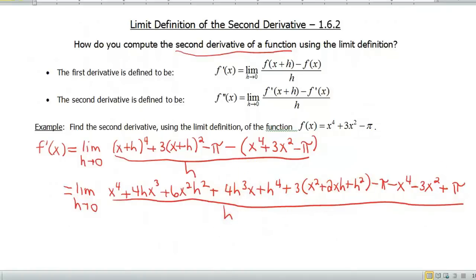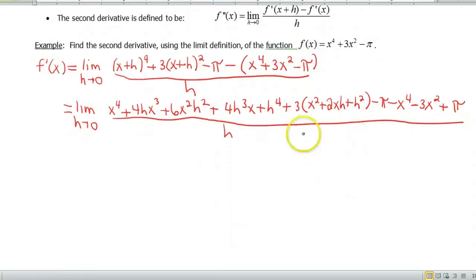Okay, so now we have to do some algebra here. I think I'm gonna go ahead and start canceling some things, only because this is so ginormous. So I'm gonna use a different color here. So my x to the fourths are gonna cancel, and my pi's are gonna cancel. And unfortunately for now, that's about it.